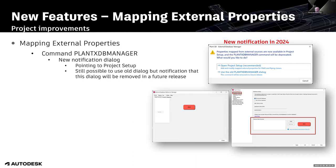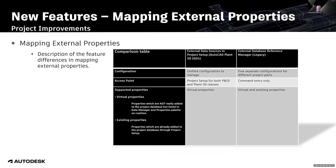In Database Setup, there is something new at the bottom. If you click Add, you are able to connect to an external data source. Comparing the two commands: in 2023 and older you had these five separate configurations for different project parts. Now it's unified — you only have to add the external data source once and it works for all classes, whether it's a piping class or a PINID class. It's now integrated in Project Setup for both PINID and Plan3D classes.